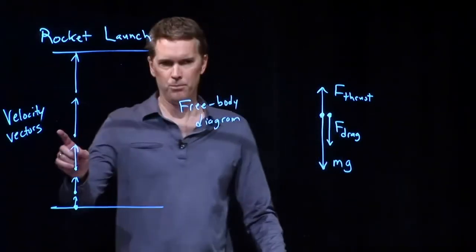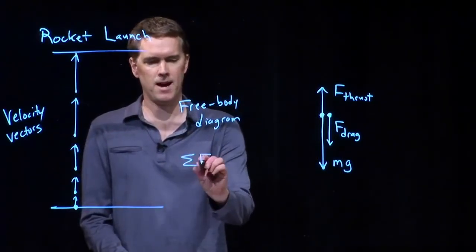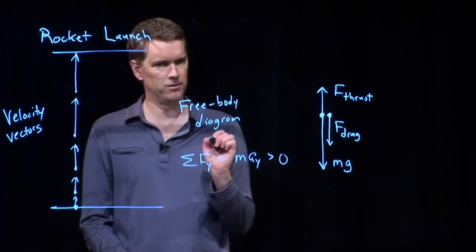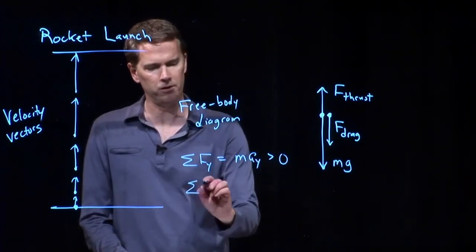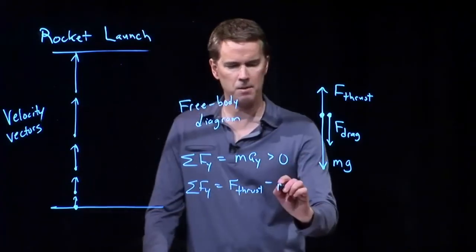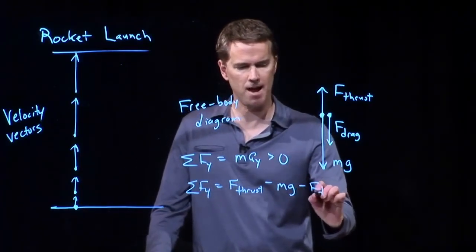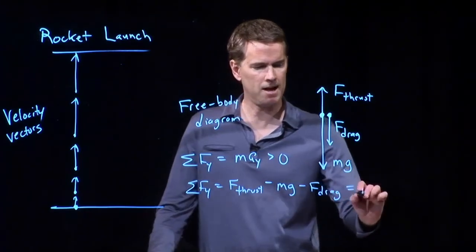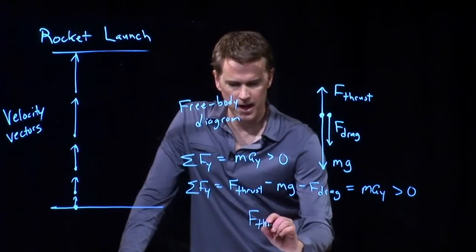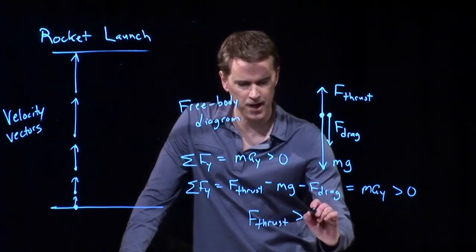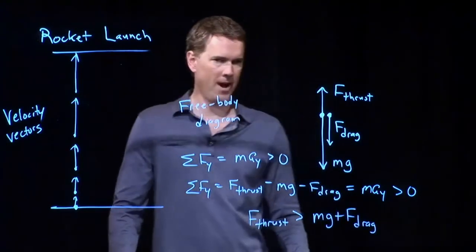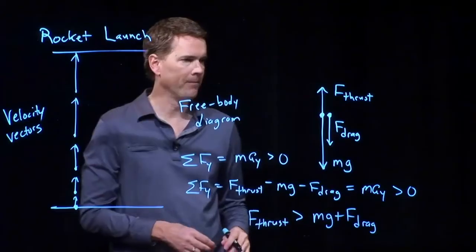...then we have to have a positive number for this. This is going to be bigger than zero, which means that all my forces, F thrust going up, minus Mg minus F drag, has to be bigger than zero. And if that has to be bigger than zero, then F thrust has to be bigger than the combination of Mg and F drag, right? And I can move these over to the other side of the equation and I get that.